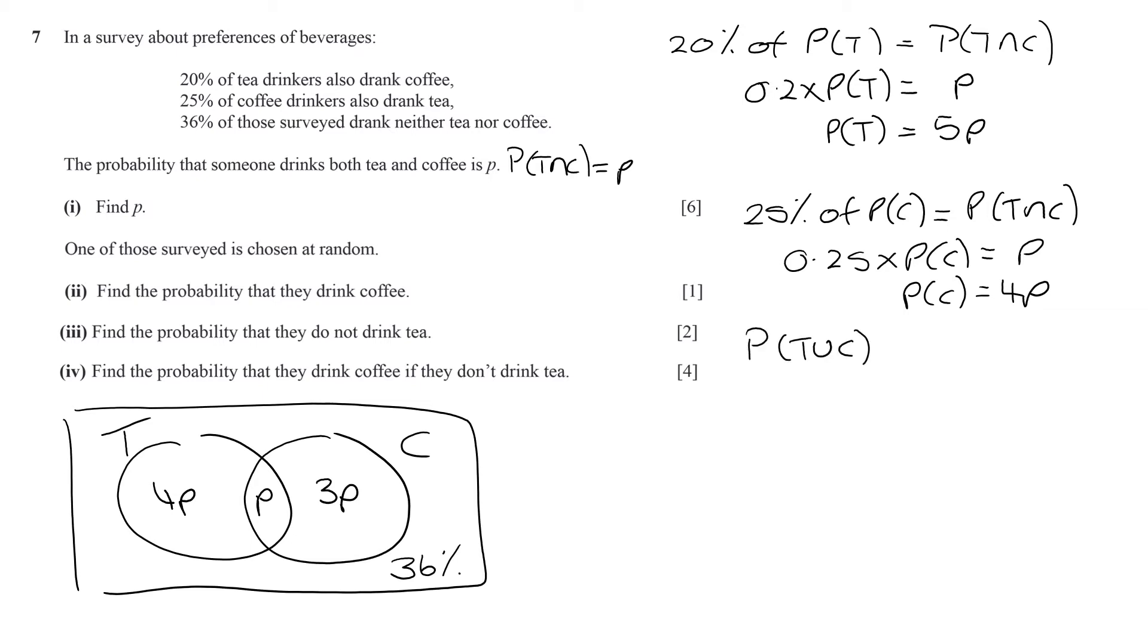That gives us that the probability of tea or coffee, which we know has to be 64%, is equal to 8p, so p must be 8 percent, i.e. 0.08. For part (a), find the probability that they drink coffee is 4p, so that's 0.32.